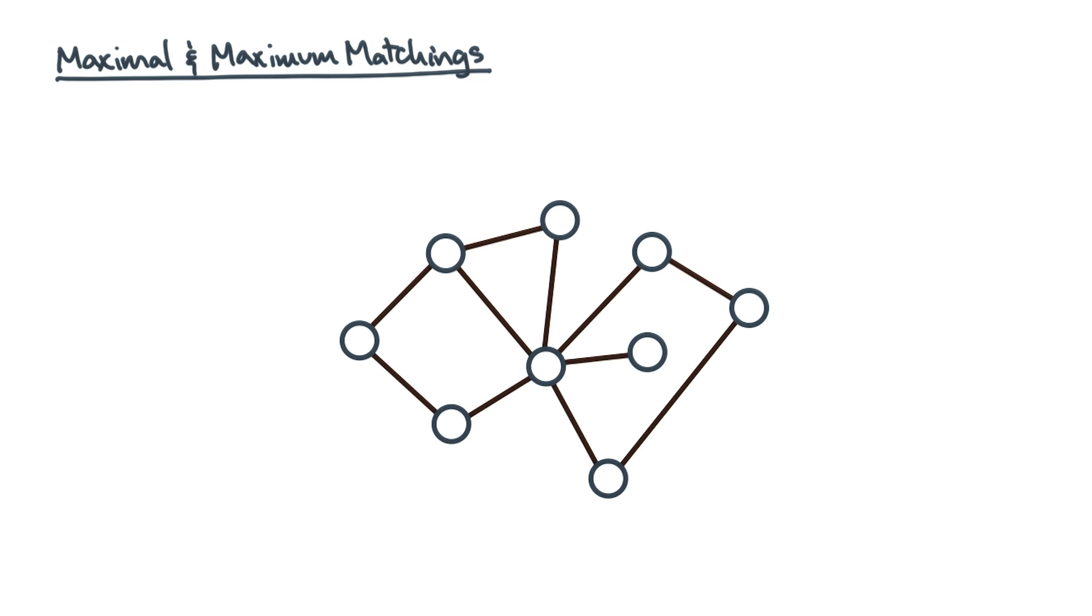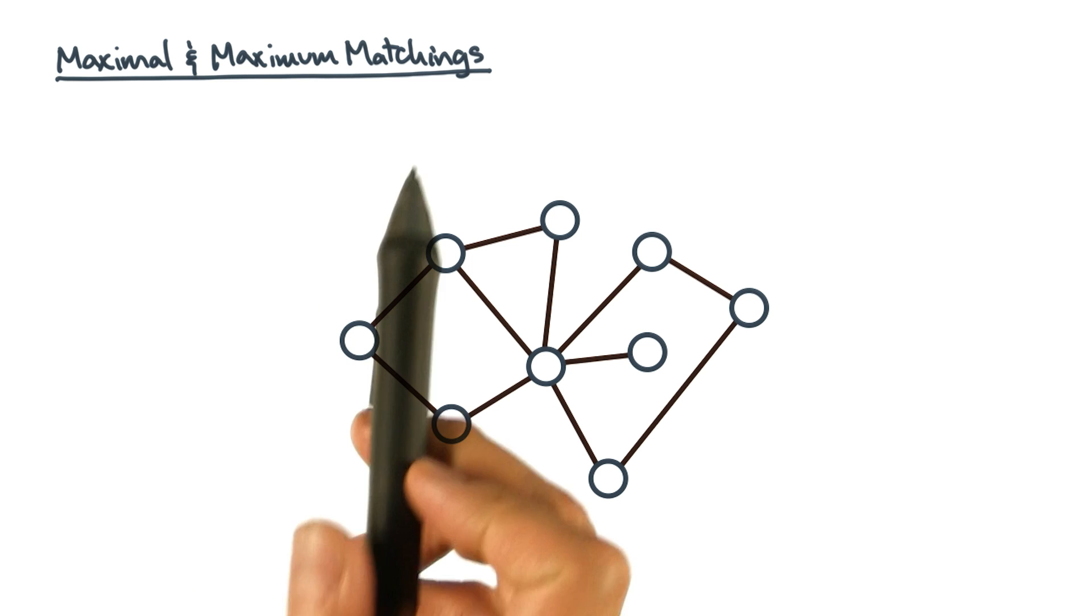To give a complete algorithm for coarsening a graph, you need a scheme to decide which vertices to combine. One idea is to compute a matching.